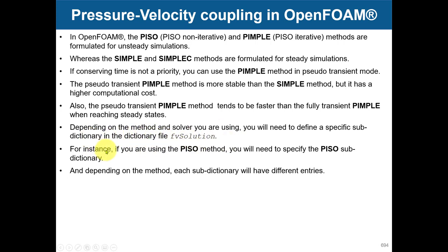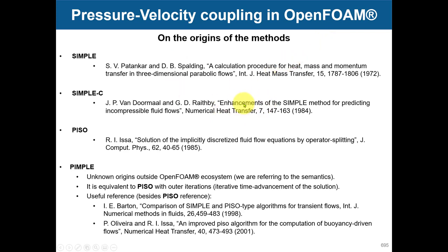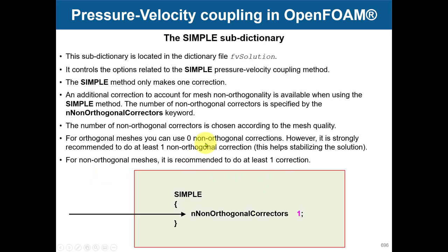SIMPLE, PISO, and PIMPLE are related to pressure-velocity coupling and to specific iterative methods. There are references about the origins of these methods — PIMPLE in OpenFOAM is the iterative PISO. For the SIMPLE method, the sub-dictionary in fvSolution has one key option to control: the number of non-orthogonal corrections. This is related to mesh quality and how the pressure correction is corrected. I always recommend doing at least one correction even with a perfect mesh.